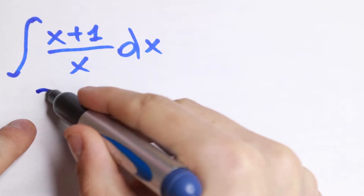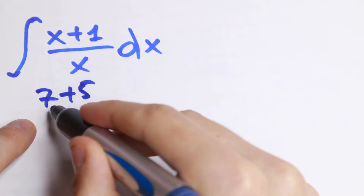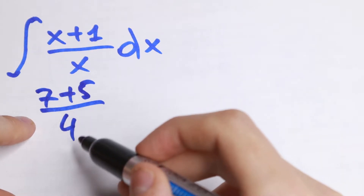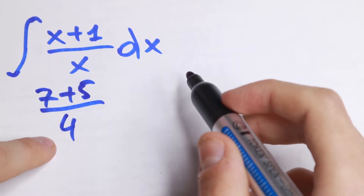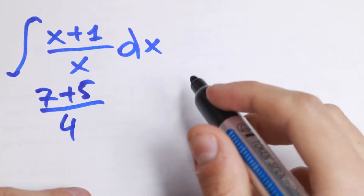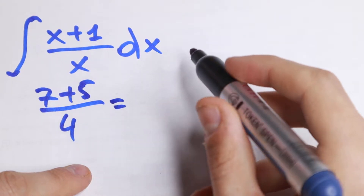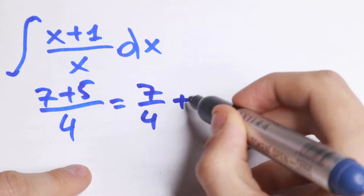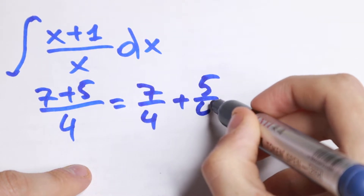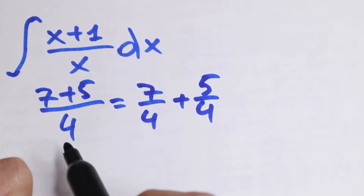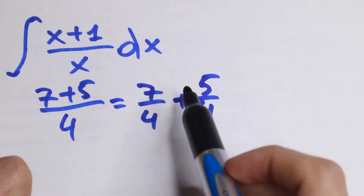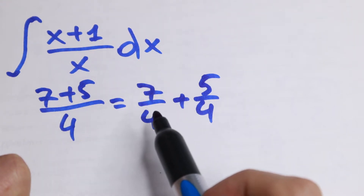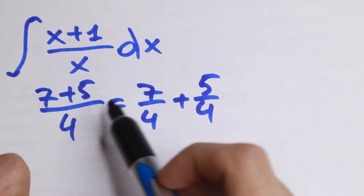First of all, take a look. If we have, for example, 7 plus 5 in our denominator dividing by, for example, 4 — so if we have a sum in our denominator and a constant in our denominator — we can write that as 7 fourths plus 5 fourths. This is the same. If we divide both sides by 4 we will have this case, and if we go in reverse we will have this case.